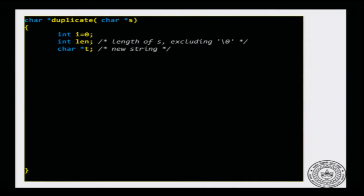Let us write this function. I will call it duplicate. It takes one array, which is the same as a pointer. I can declare it as char *s or char s[] — it does not matter. I will declare it as a character pointer s. What will it return? It will return another array, and an array is the same as a pointer, so I will return char *. The input argument is an array and the output is also an array. I will declare three variables: i for the loop, and len which will store the number of non-null characters in s.